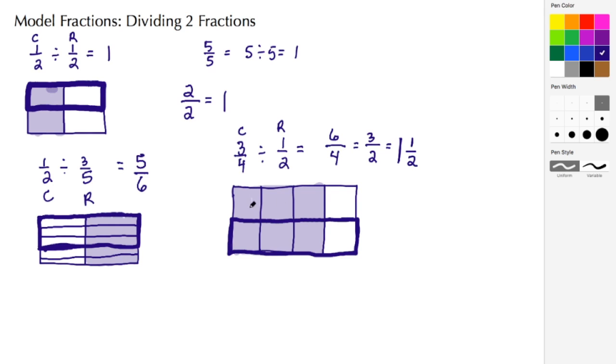And then let's do one last example. Here let's do two fifths divided by three fourths, and let's just switch the color up. So we have two fifths divided by three fourths. Again, that's columns and then rows, so we're going to create a rectangle. This rectangle is going to have five columns.